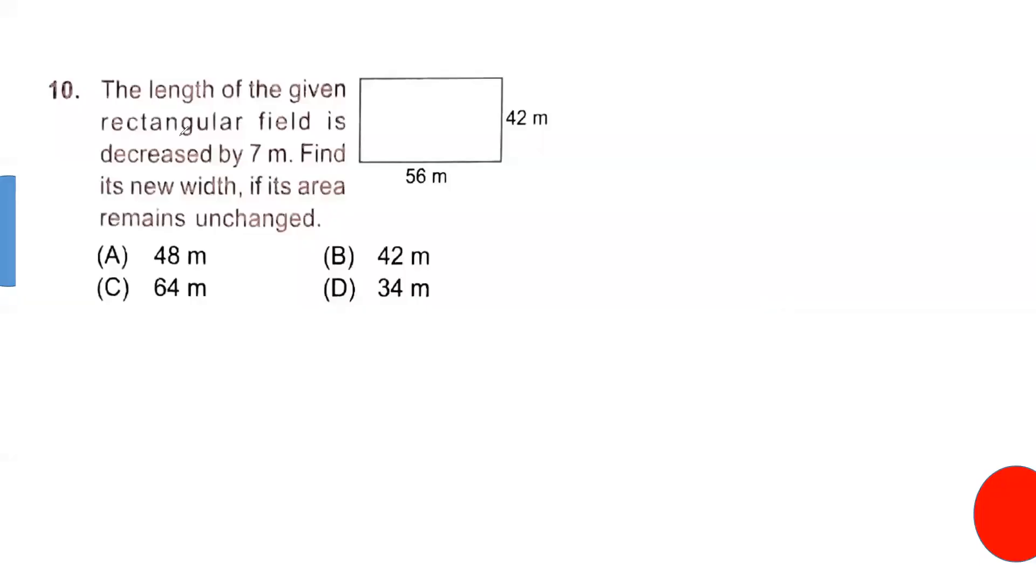Now see this question. The length of the given rectangular field is decreased by 7 meter. Length is 56 meter, decreased by 7 meter, so we got 49 meter. But they say the area is unchanged. So 56 times 42 equals 49 times x. You don't know the new width, that is your x. Now cancel by 7 from all terms. So x is 48 meter. This gives you the answer 48 meter.